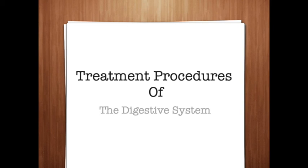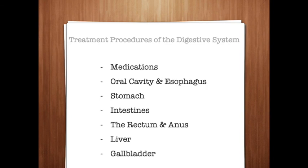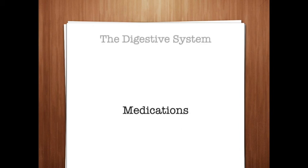Now let's cover the different treatment procedures available for the digestive system. We'll look at medications as well as procedures for the oral cavity and esophagus, stomach, intestines, rectum and anus, liver, and gallbladder. Medications include acid blockers, which are taken before eating and block the effects of histamine that signals the stomach to produce acid. An antiemetic prevents or relieves nausea and vomiting. An emetic produces vomiting. Laxatives are medications or foods given to stimulate bowel movements. Oral rehydration therapy (ORT) is a treatment in which a solution of electrolytes is administered orally to counteract dehydration that may accompany severe diarrhea.